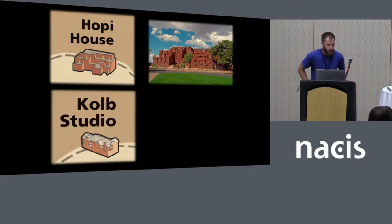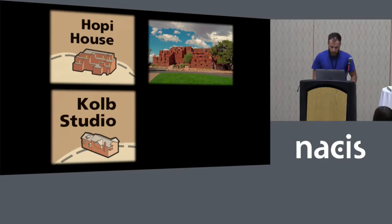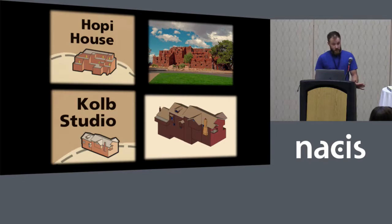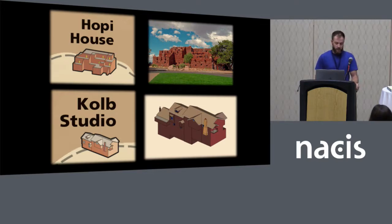This is another one I created — the Kolb Studio, a sort of art gallery museum. It sits right on the rim of the Grand Canyon with a really incredible view. There weren't that great pictures of it, but someone had actually created 3D models of these in SketchUp. At the time, I didn't export it from SketchUp the way I'll show in a minute. I just used it as a guide, switching between windows with one on one monitor, and built it in Illustrator using this 3D model view.